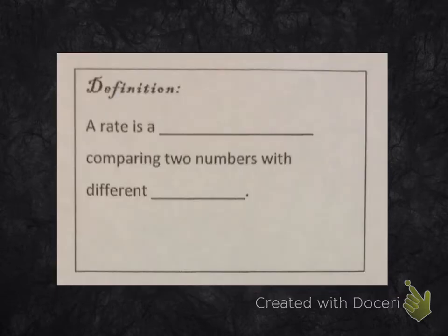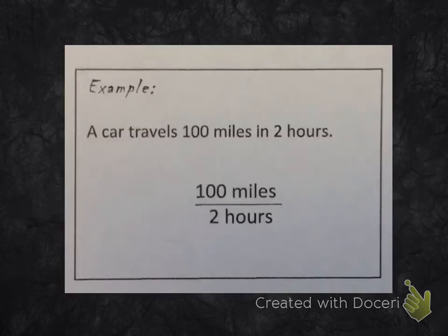A rate is a ratio comparing two numbers with different units. For example, a car travels 100 miles in 2 hours. We can write this as 100 miles over 2 hours. So that means the same thing as 100 miles in 2 hours.